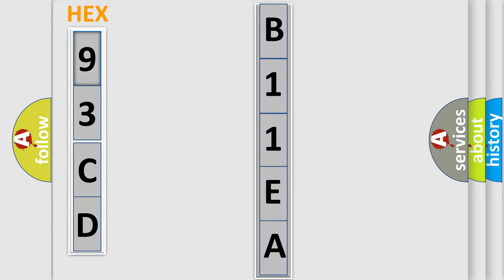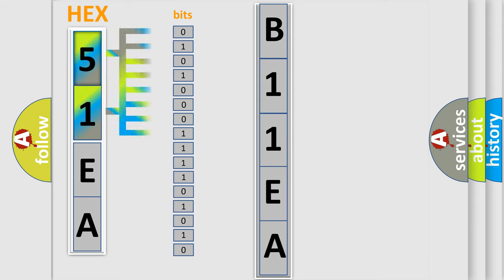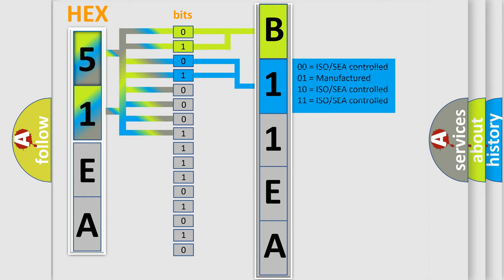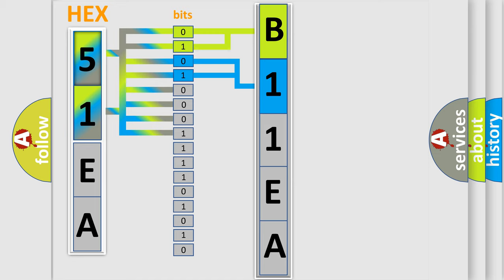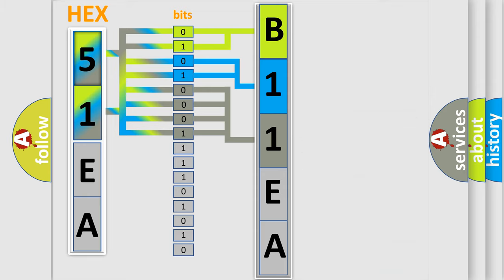The next two bits determine the second character. The last four bits of the first byte define the third character of the code. The second byte is composed of a combination of eight bits. The first four bits determine the fourth character of the code, and the combination of the last four bits defines the fifth character. A single byte conceals 256 possible combinations. We now know in what way the diagnostic tool translates the received information into a more comprehensible format.